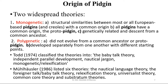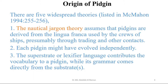Todd classified the theories into the Baby-Talk theory, Independent Parallel Development, Nautical Jargon, Monogenetic, and Relexification. Mohler-Hosler also listed six theories: the Nautical Language theory, the Foreigner-Talk or Baby-Talk theory, Relexification theory, Universalist theory, Common Core theory, and Substratum theories. So besides the monogenetic and polygenetic theories, there have been a number of theories proposed by Todd and Mohler-Hosler. There are five widespread theories as listed in McMahon.